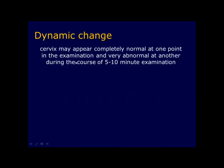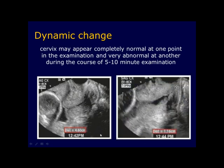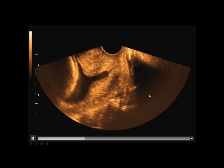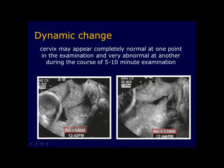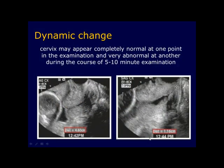The cervix may appear completely normal at one point and very abnormal at another point during a five-to-ten minute examination — this is called dynamic changes, and usually happens when a woman is having contractions. In one patient with a history of pregnancy loss, the cervix measured about 40 millimeters at one moment, then just two minutes later measured only 11 millimeters. Therefore, in at-risk patients or when initial images show a cervical abnormality, the cervix should be observed continuously for several minutes. A follow-up study in two to three days is indicated if suspicious but non-diagnostic changes are seen.